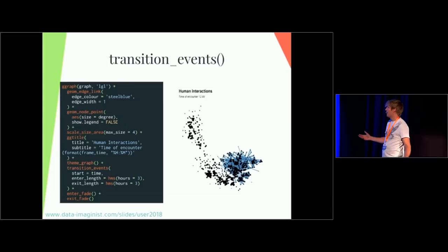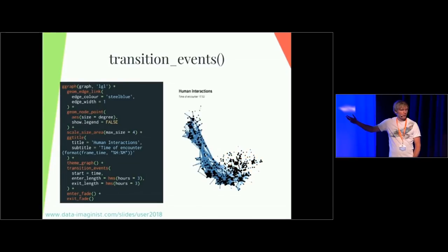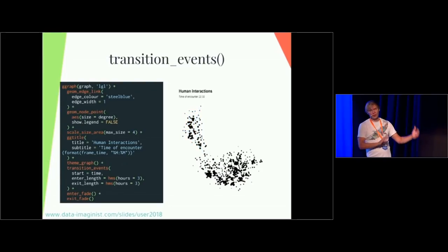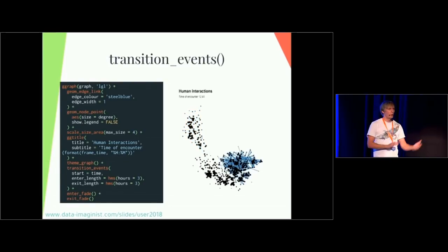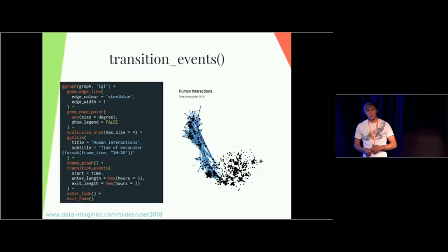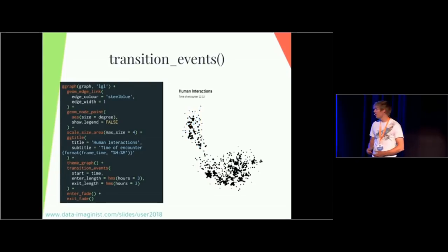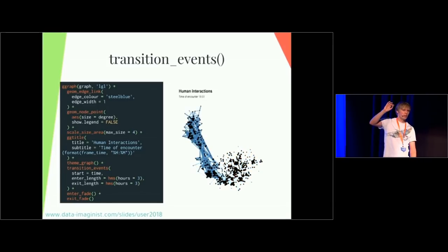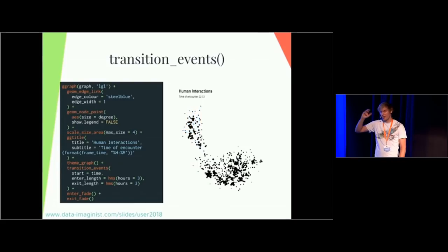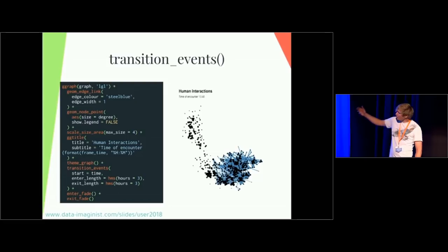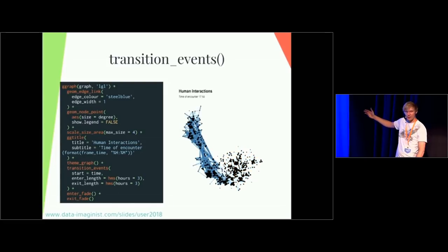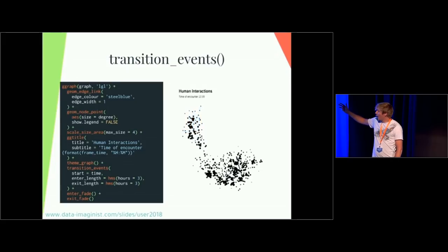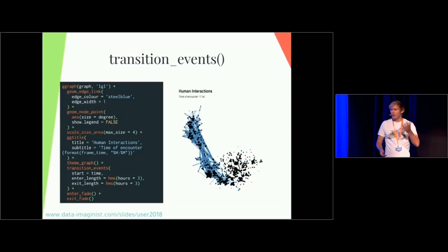There are other transitions, like transition_events. I'm showing this with a ggraph example, just to show that some of the power of building on top of ggplot2 is that it can work with other ggplot2 extensions like ggraph. So you get network visualization support out of the blue — I've not done anything to support it. What we're showing here is a transition that takes every data point as a specific event in time, plots it, and lets it enter and exit. Our edges here show human encounters at a conference — not this conference, I haven't been following you — and this is just a time point where I'm letting it fade in and fade out, so you can see how people are moving and how groupings change over time.